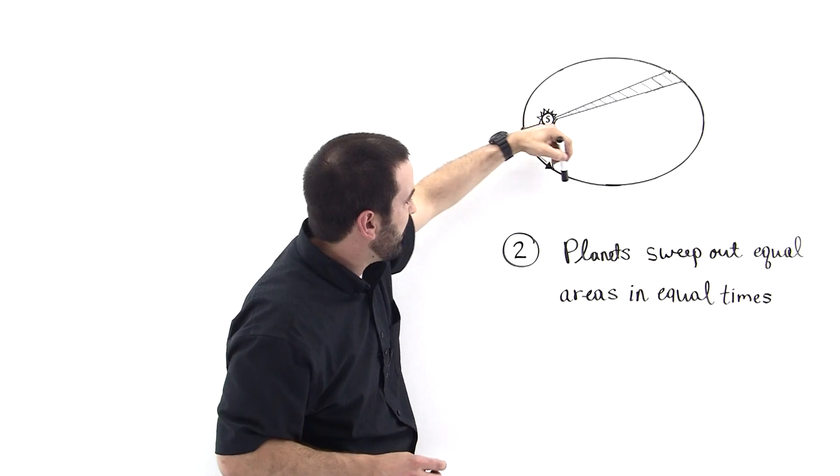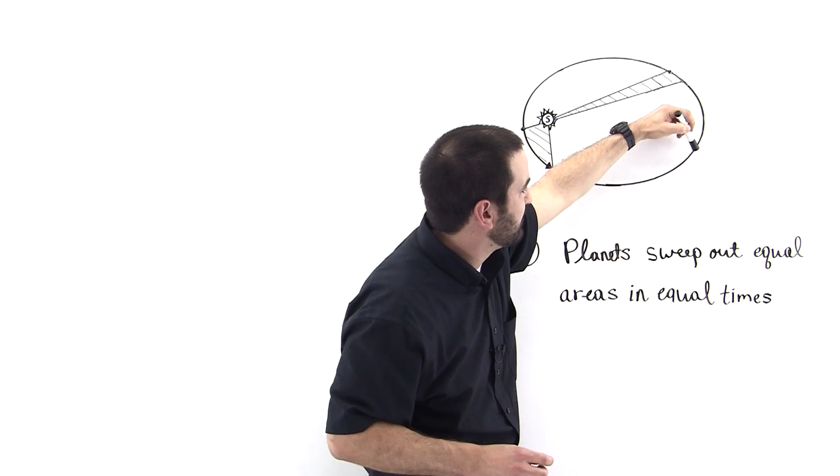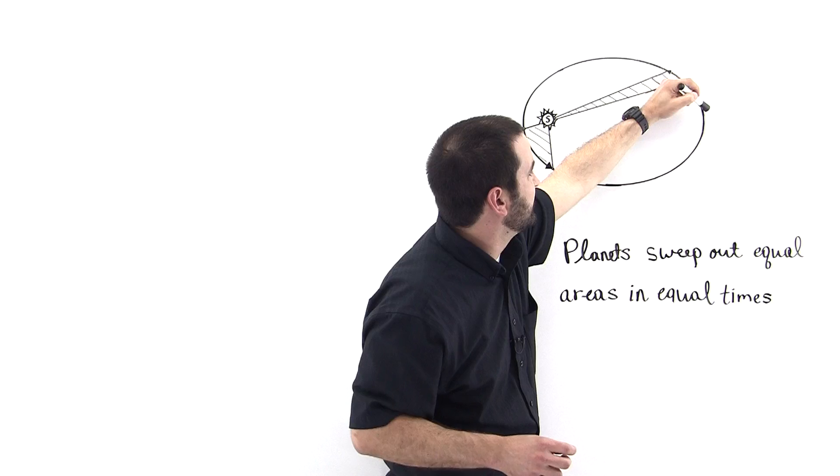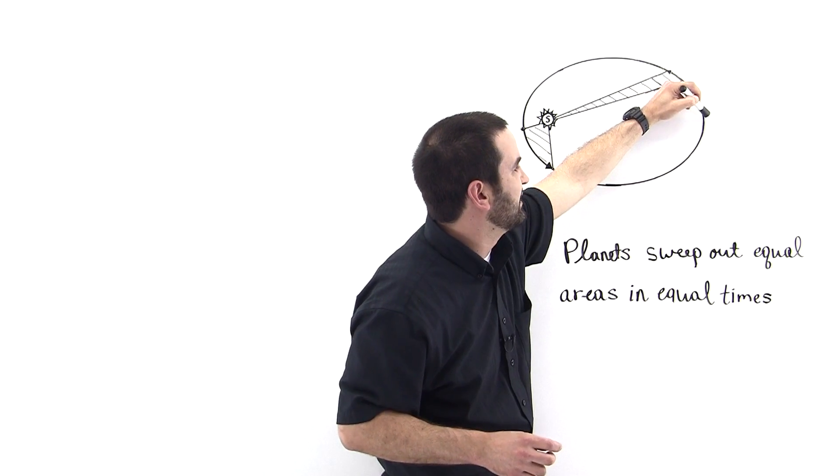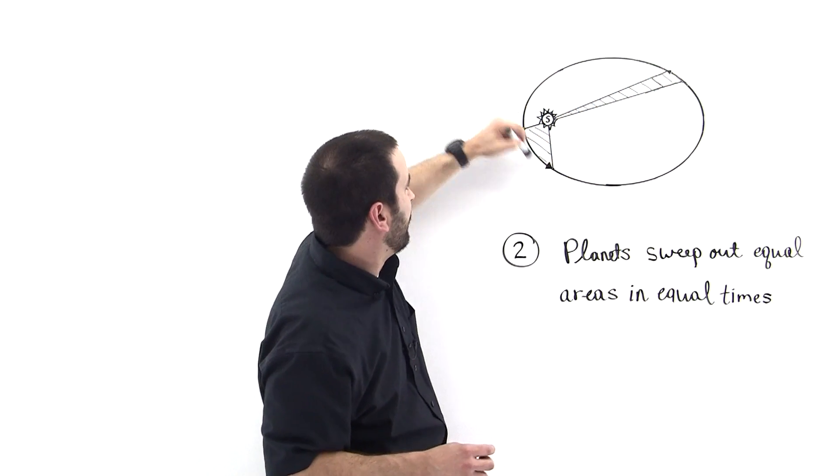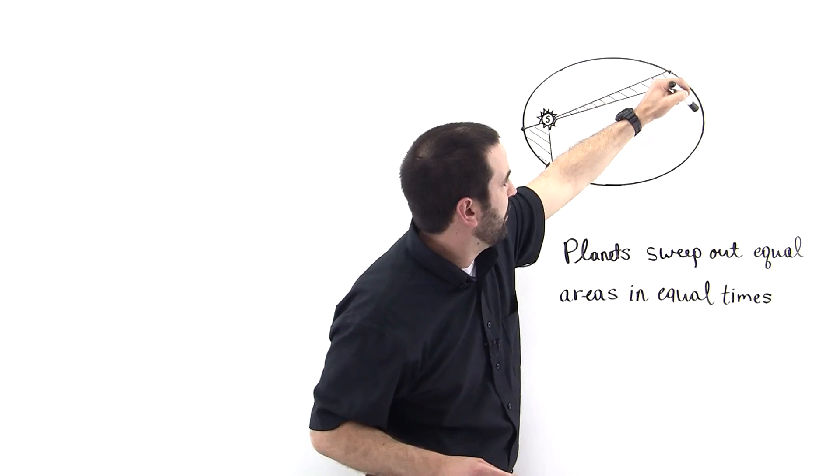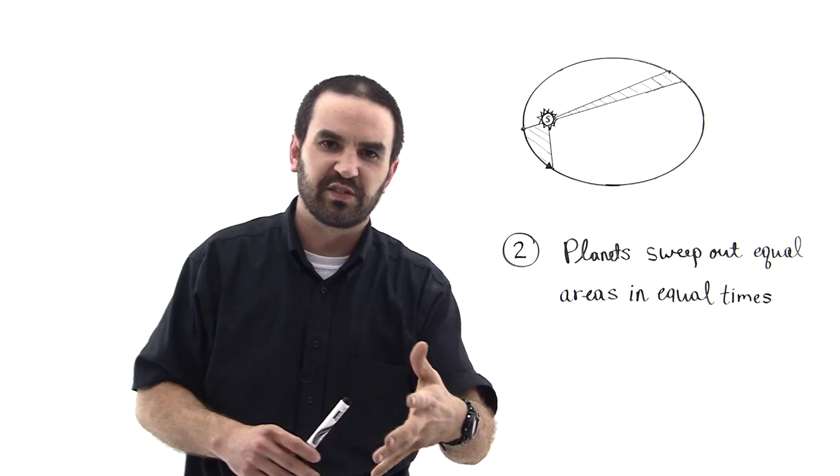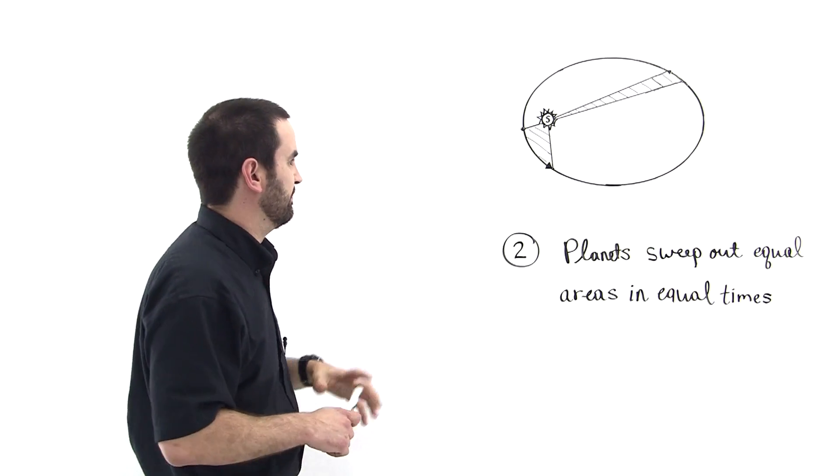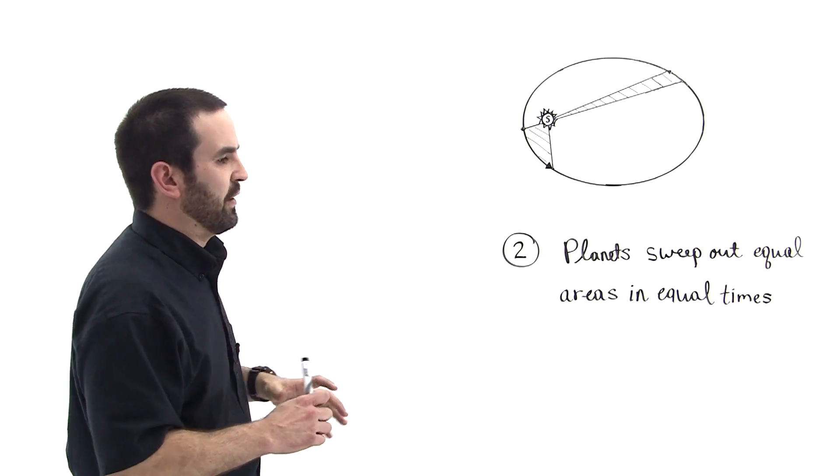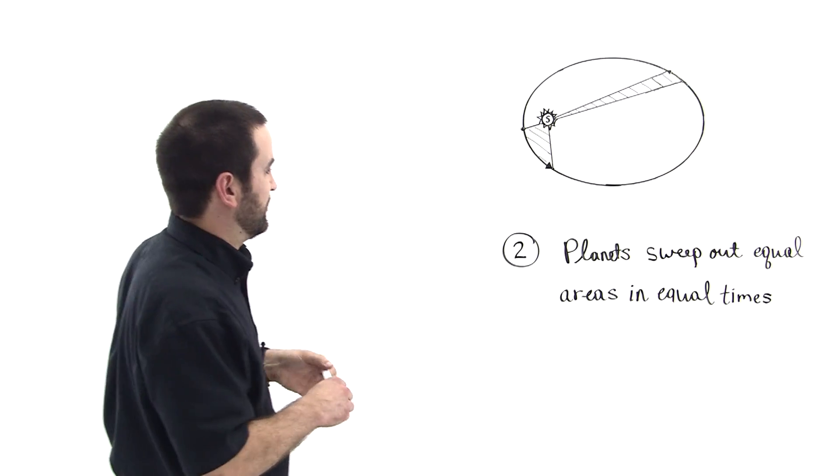And then it zips around and then it slows down, it's moving slower and slower until it reaches aphelion and then it's moving at its slowest and then so on. You can look for some animations online to see a better description of that or a more accurate time lapse fashion.